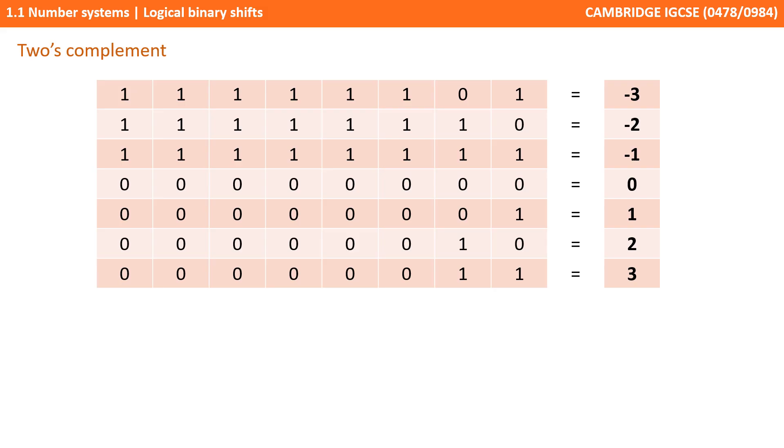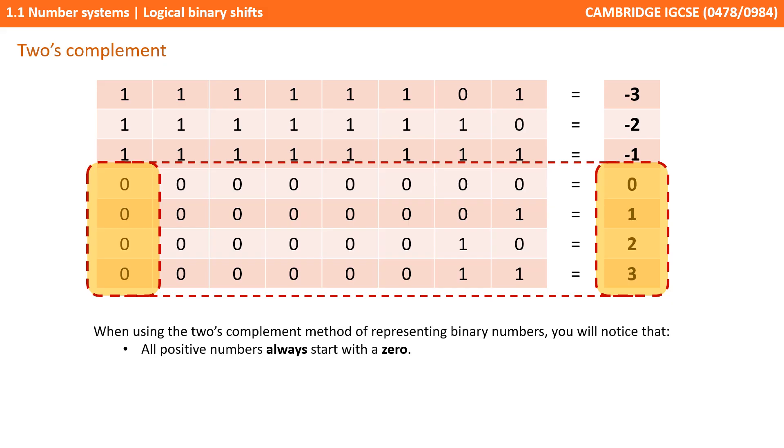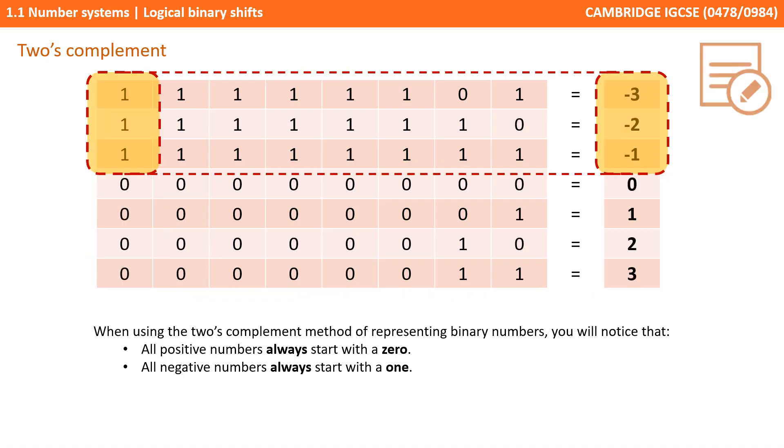Before we dive into how it actually works, a couple of observations. Here are the numbers minus 3 up to positive 3 in 2's complement. You'll notice that when using the 2's complement method to represent binary numbers, all positive numbers start with a 0, and this is also the case for the number 0, which is neither considered positive nor negative in mathematics. Likewise, you'll notice that all negative numbers always start with a 1.